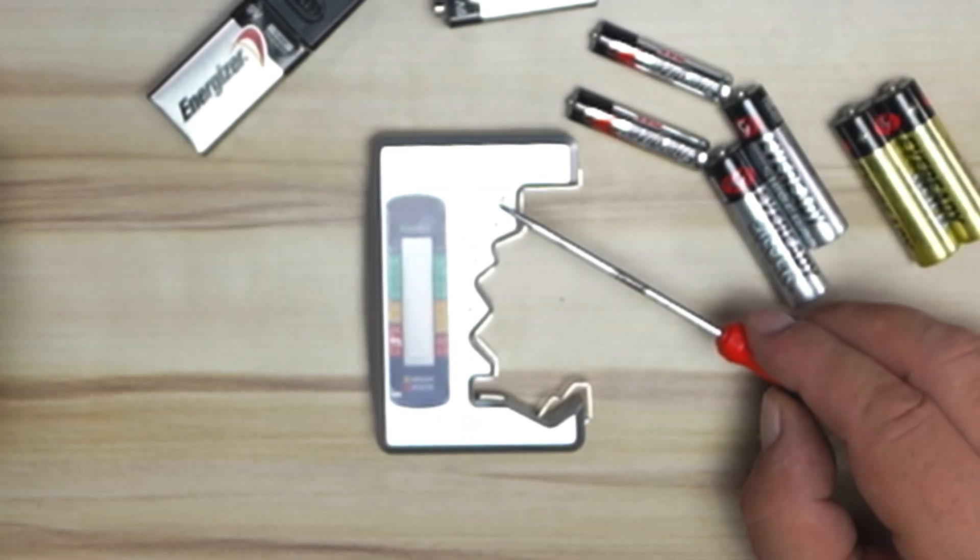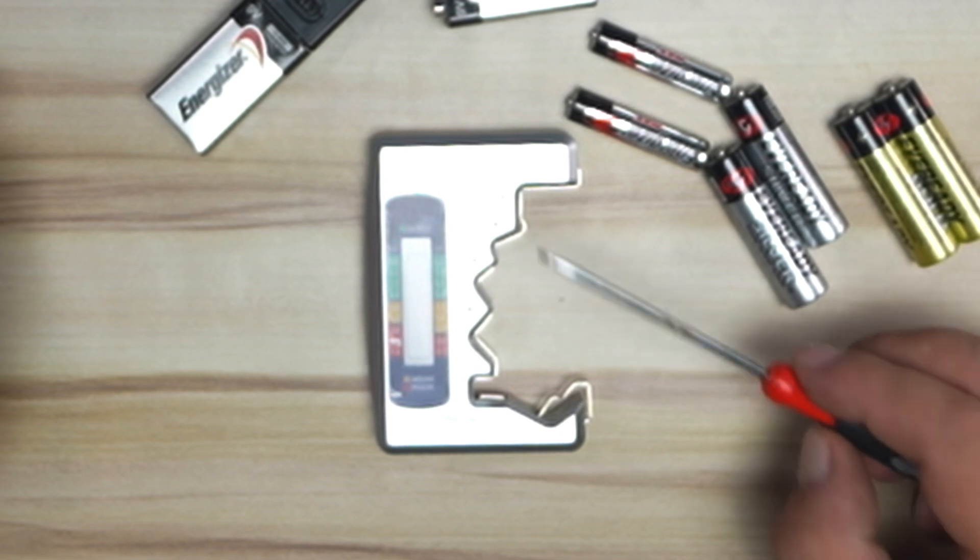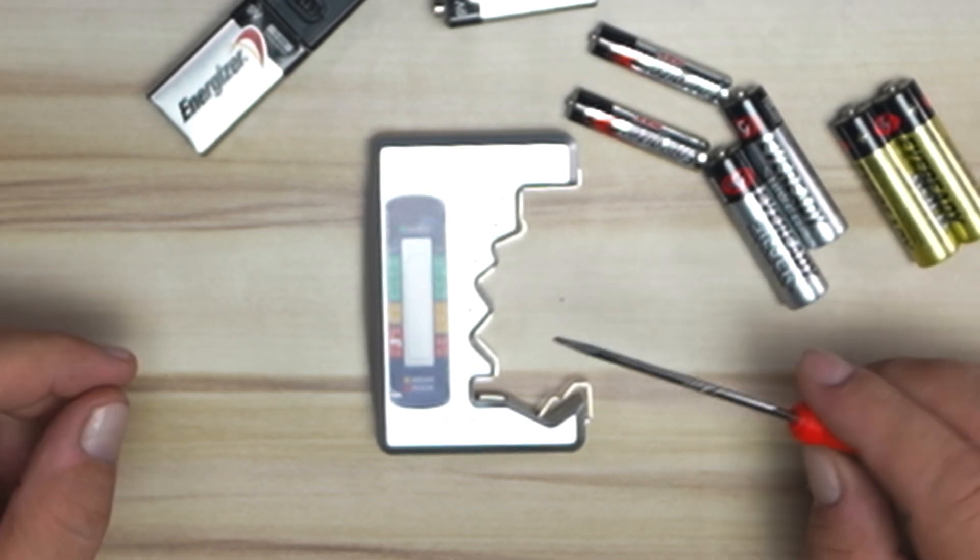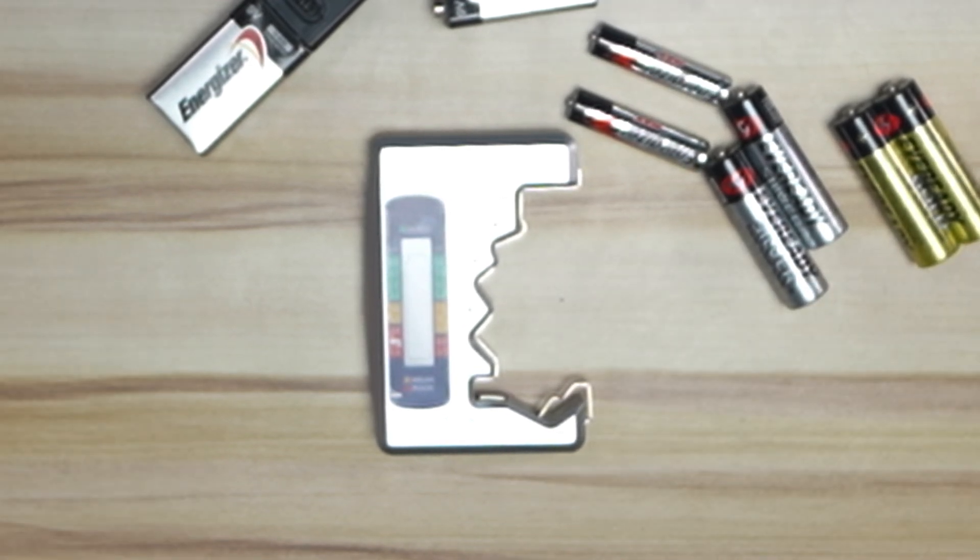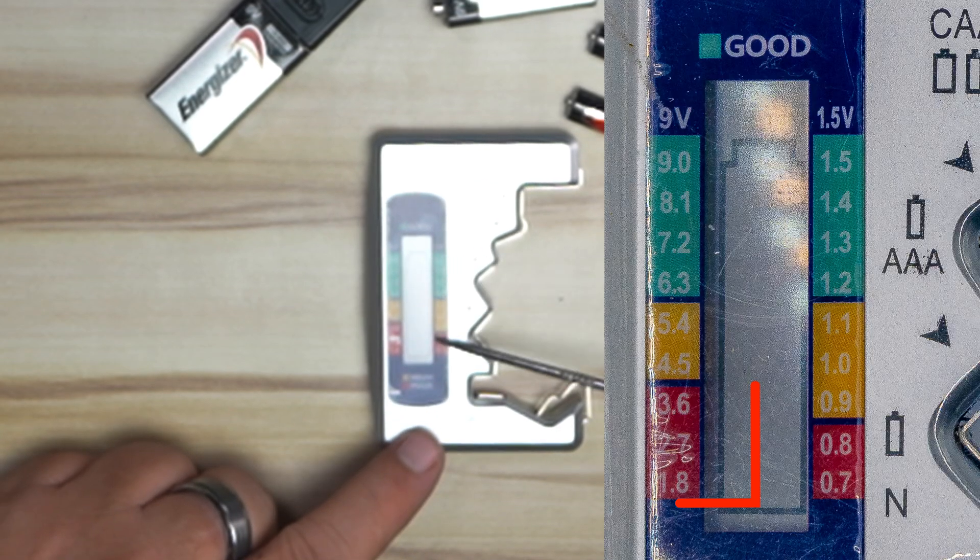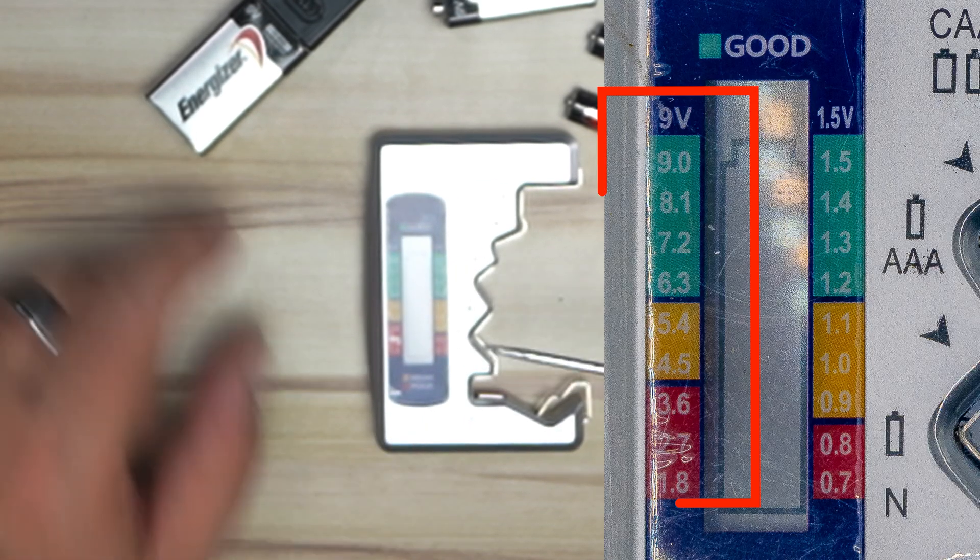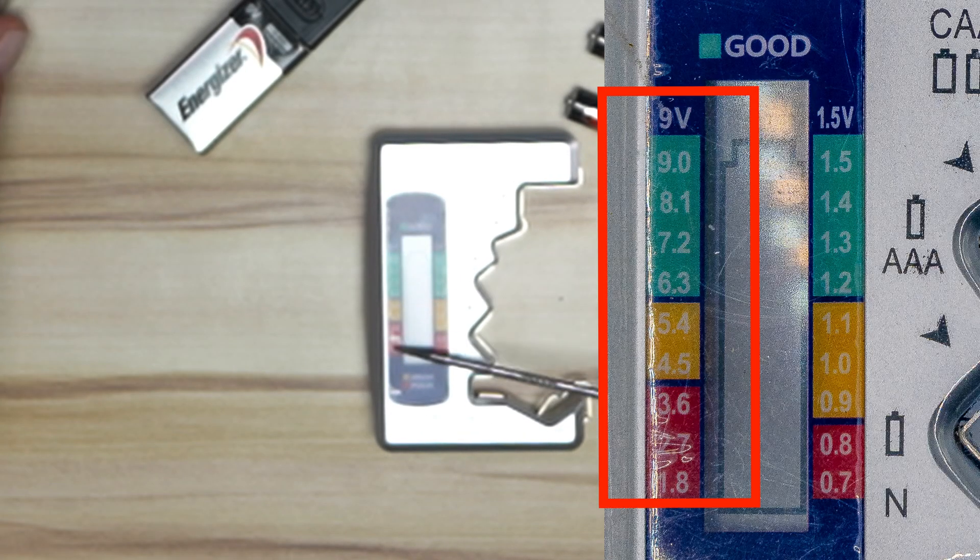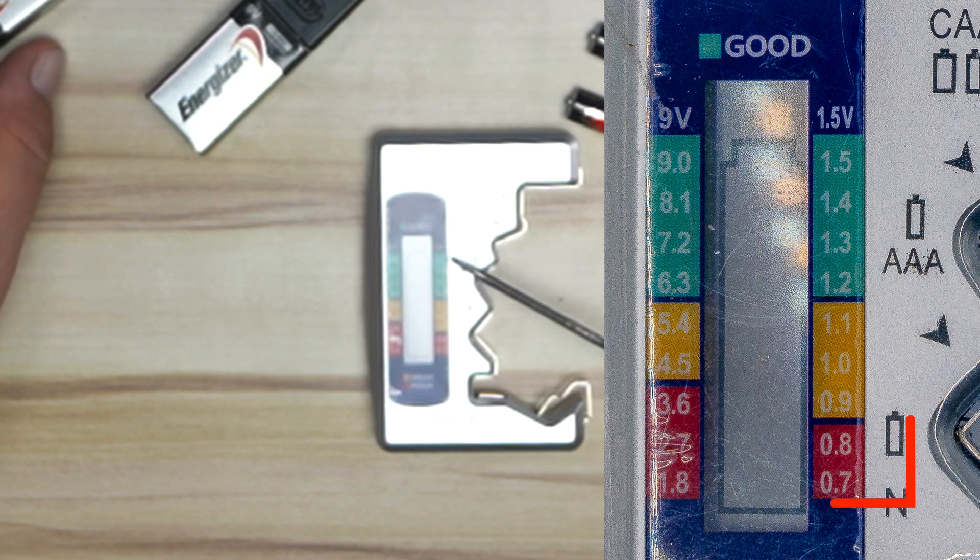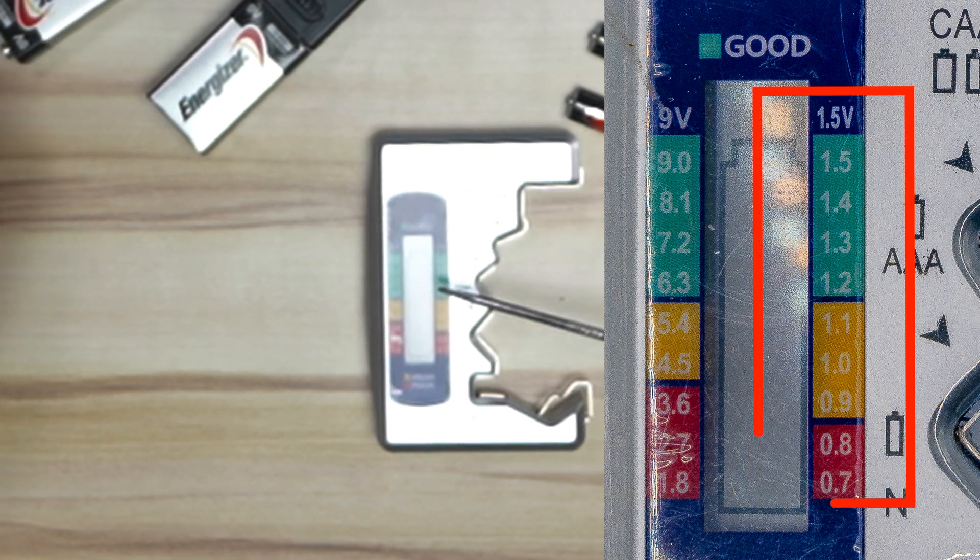Now I don't have any D cells, and I don't have any C cells, and I don't have the N cells either. It does all those as well, but I don't have any. And you have these little graphs here. So the left side is for your nine volts for these batteries. And for the right side, it's the 1.5 volt batteries, which are all these. These are the indications, which you've got your green, yellow, and red.